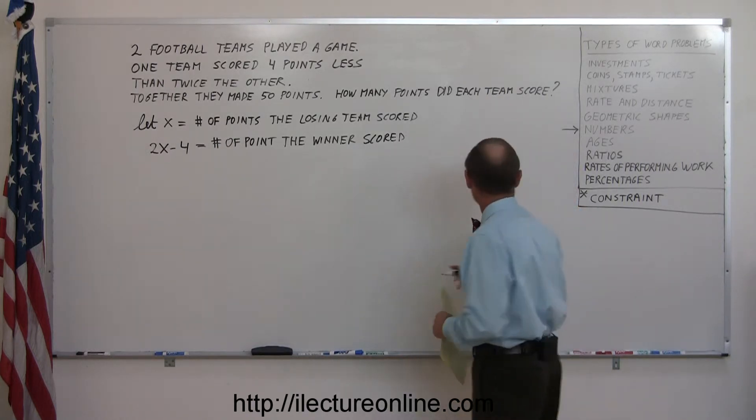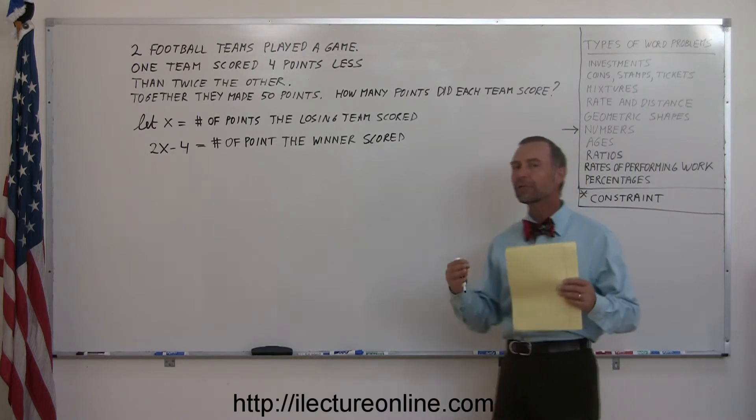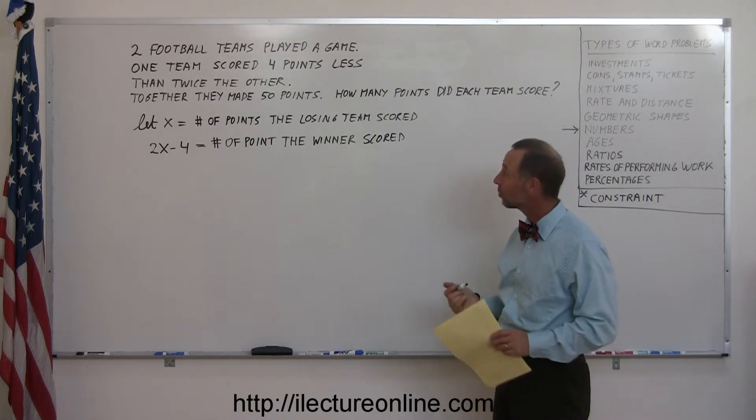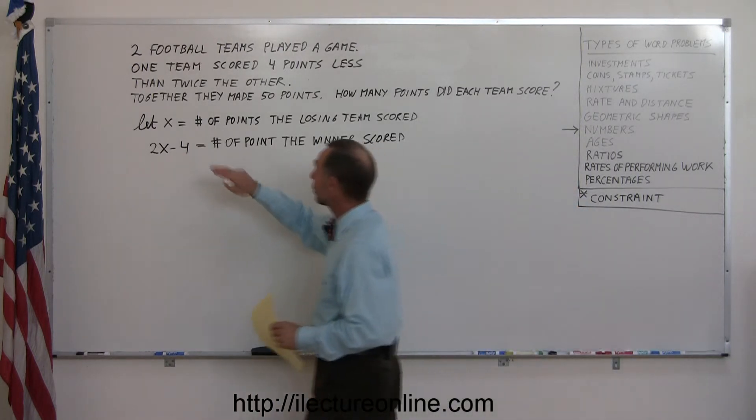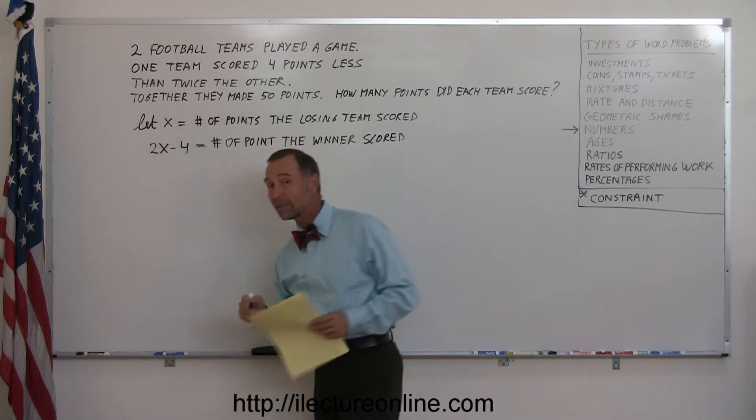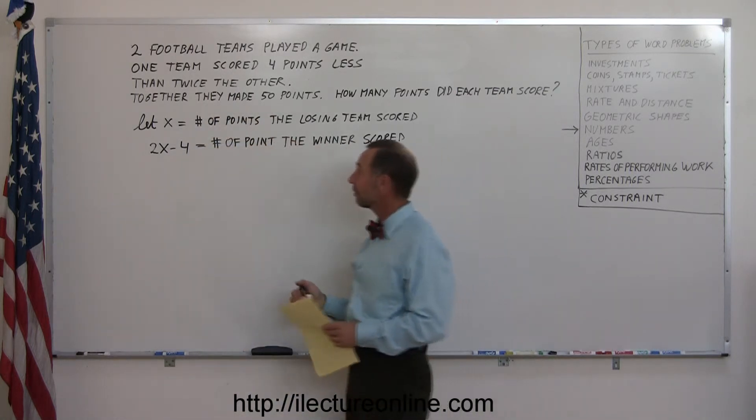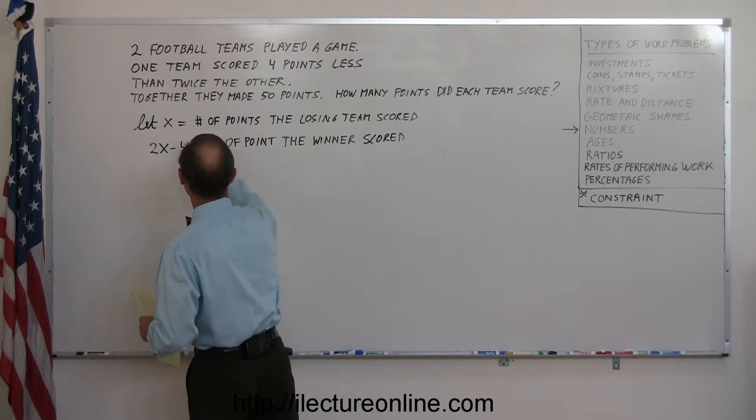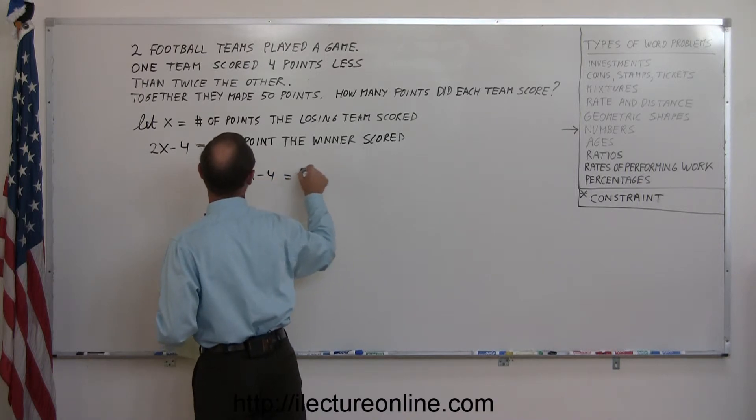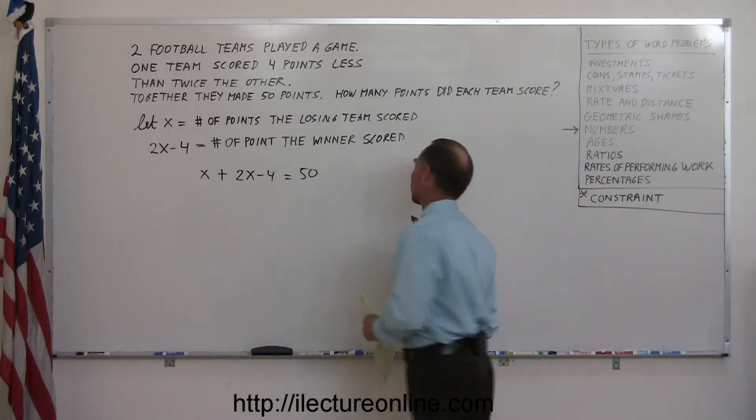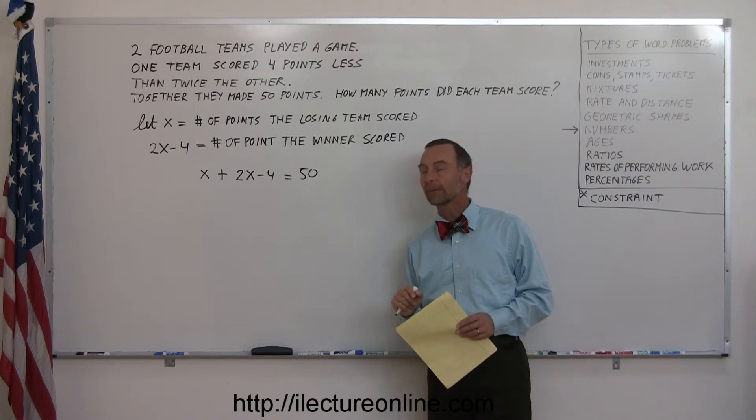So now we need a constraint, we need some sort of information that allows us to figure out what those numbers are. They tell us right here that together they made 50 points. That means if we add it up together, that should equal 50. So the number of points that the losing team scored, plus the number of points that the winning team scored, that must add up to 50 points. There's our constraint that will allow us to solve the problem.